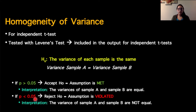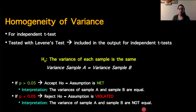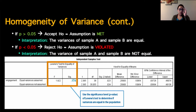If we get a p-value less than 0.05, we reject the null hypothesis, but that in this case would mean that our assumption has been violated, or that the variance of sample A and sample B are not equal to each other. Remember, our reject and accept are mutually exclusive. So in SPSS, in your output you'll get a table labeled as independent samples test.